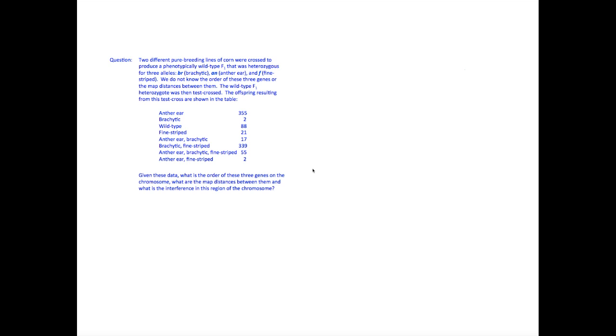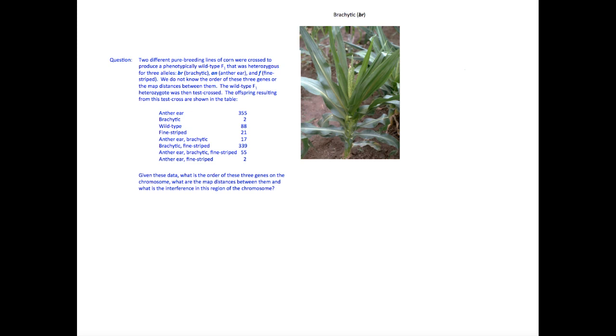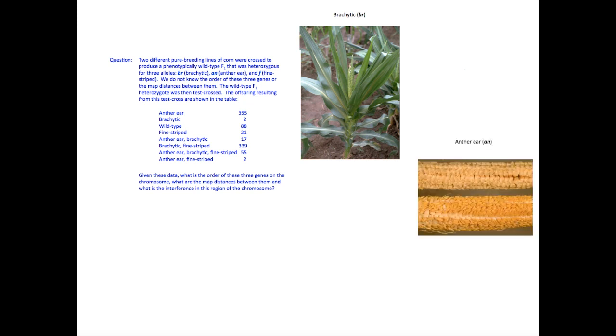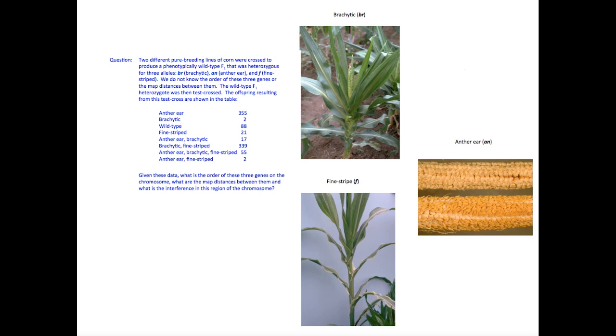Let's review what the question's telling us. Three recessive traits are followed in this cross. Brachytic plants, which have a mutation in the BR gene, have shortened internodes and are dwarfs. Anther-ear plants, the result of a mutation in the AN gene, have the male parts of the flower, the anthers, within the ear of the corn. Fine-striped corn, with a mutation in the F gene, has white lines on the leaves.